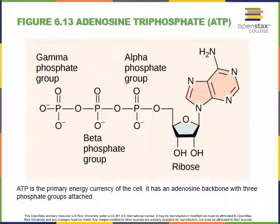Here we see a figure showing the chemical structure of ATP, or adenosine triphosphate. ATP functions as an energy currency in the cell. It is a storage form of energy. As we break down glucose — as glucose becomes oxidized — cells will synthesize ATP, and then ATP can be used by the cell in order to perform work.